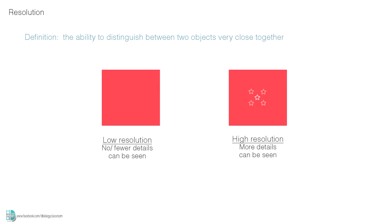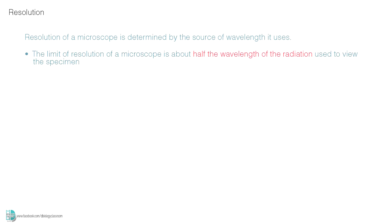Resolution is defined as the ability to distinguish between two objects very close to each other. It means the higher the resolution of an image, the greater the details can be seen. In terms of the microscope, the resolution is determined by the source of the wavelength it uses. The limit of resolution of a microscope is about half the wavelength of the radiation used to view the specimen.